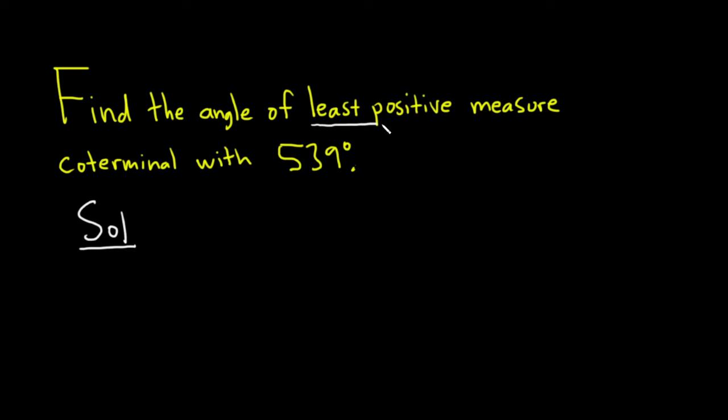We want the smallest angle, right? The one of least positive measure. So we'll start by subtracting 360 to try to make it smaller.